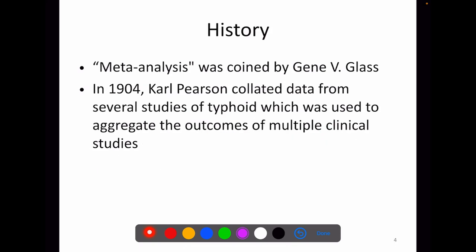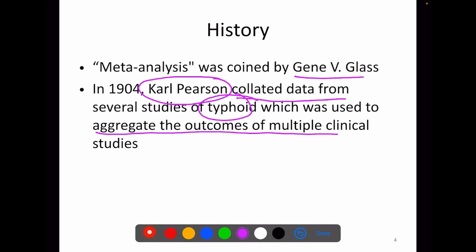Let us move on to the history of meta-analysis. The term meta-analysis was coined by Gene V. Glass, who is an American statistician. Historically, a meta-analysis-like research was conducted by Carl Pearson in 1904. He tried collating the data from several studies of typhoid and aggregated the outcomes of the multiple clinical studies on typhoid.